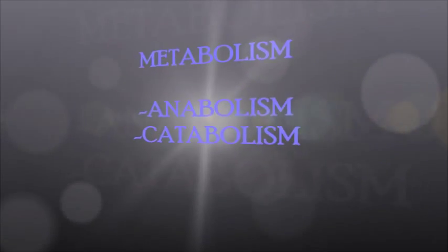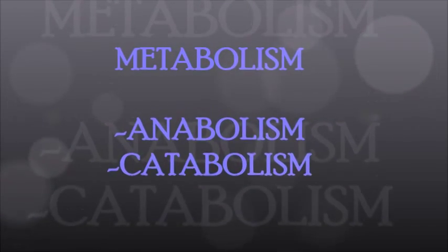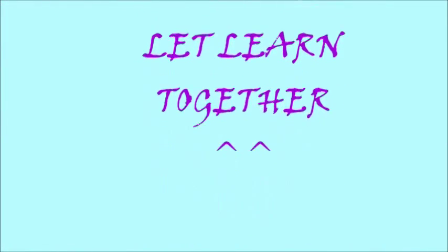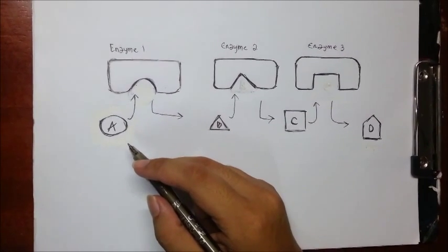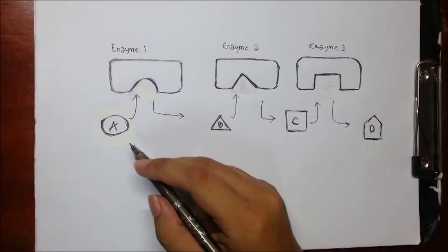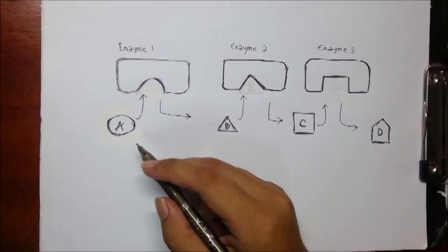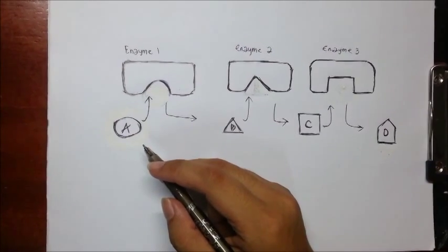There are two different types of Metabolism: Anabolism and Catabolism. Protein Metabolism is defined by the enzyme. The basic unit of any pathway is the enzyme that comes together.